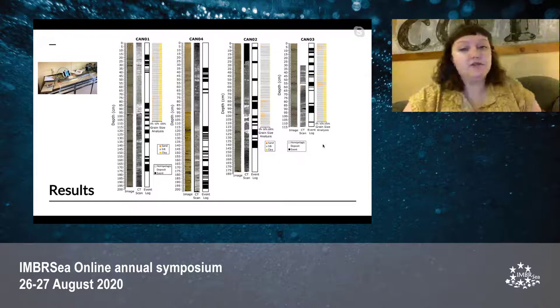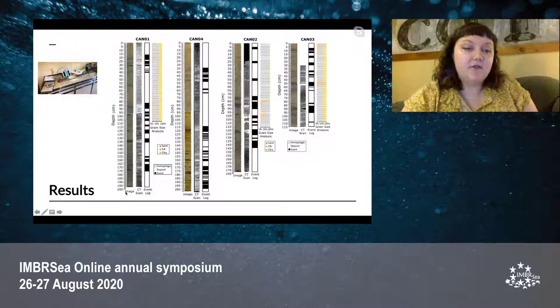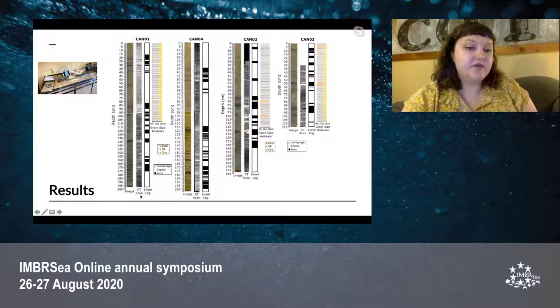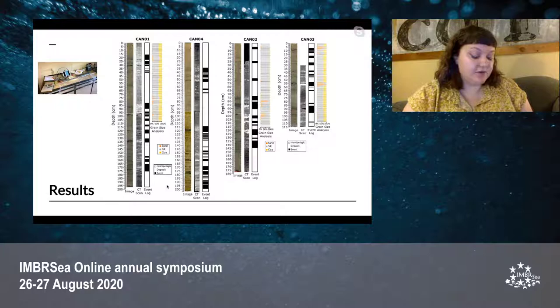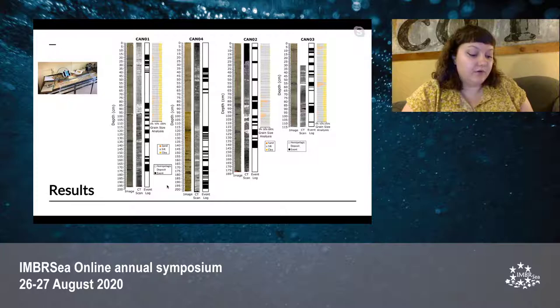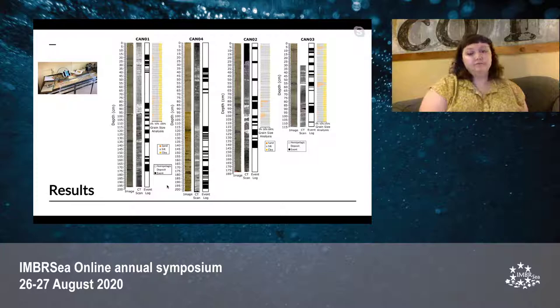For the results, we look at the four cores displayed with their depth from top to bottom. We have the image of the core supplied by the Geotech, the CT scan visualization, an event log, and the grain size analysis. The cores are composed of a yellowish-brown hemipelagic sediment interspersed with coarser-grained layers from 2 to 58 millimeters thick, and small lenses and patches of similarly coarse-grained material. Events were determined using color, grain size, and density change, and were defined as layers or lenses with more than 1 centimeter of hemipelagic sediment separating them.